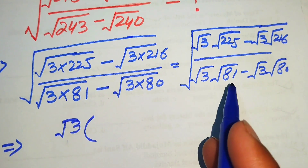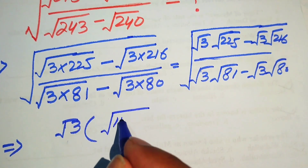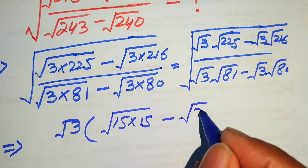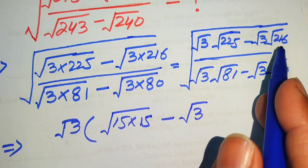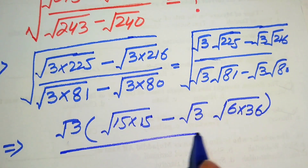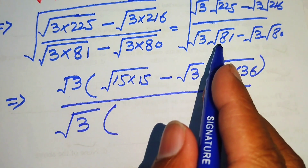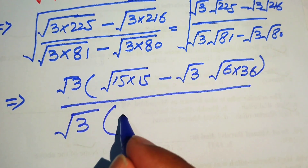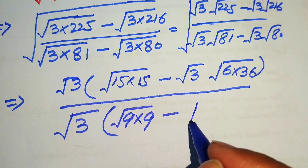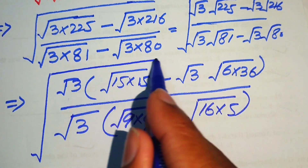Similarly, square root of 3 is common in the denominator. We write 225 as 15 times 15, and 216 as 6 multiplied by 36. We take out the common square root of 3 in the denominator; 81 is written as 9 times 9, and 80 is written as 16 times 5, giving us the whole square root.